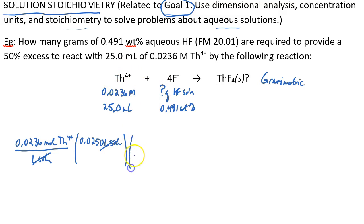Now we might want to say that for every 1 mole of thorium-4, 4 moles of fluoride are needed. And at this point, I think that's all I'm going to do for now.